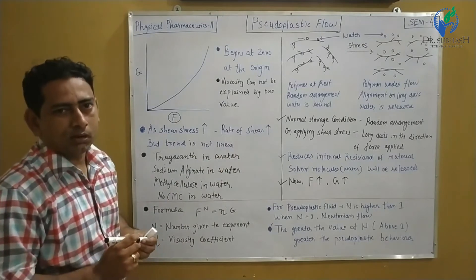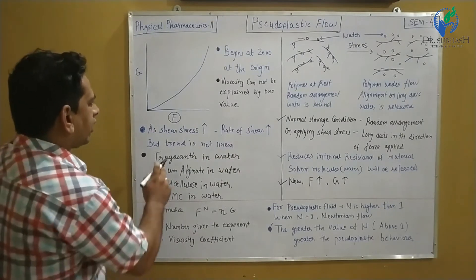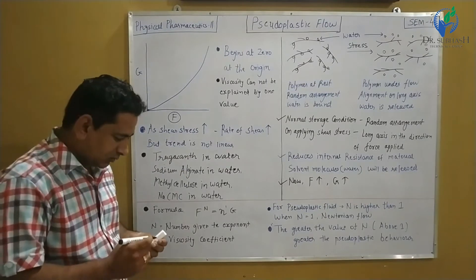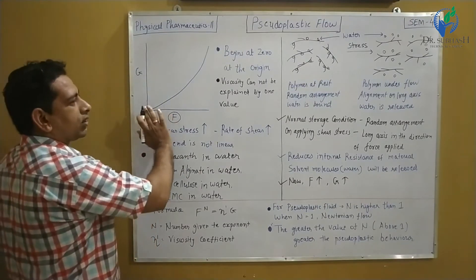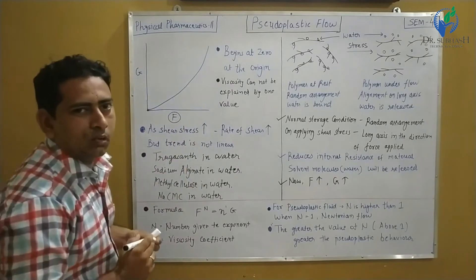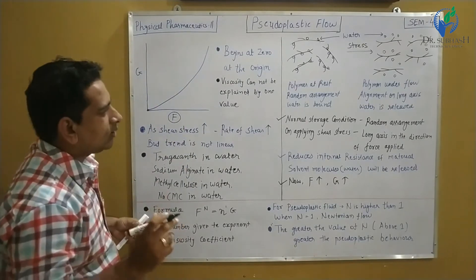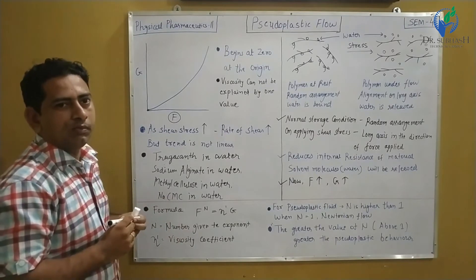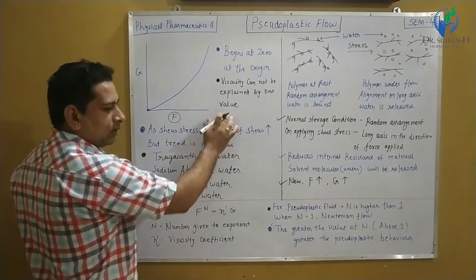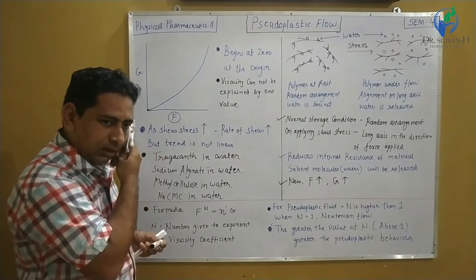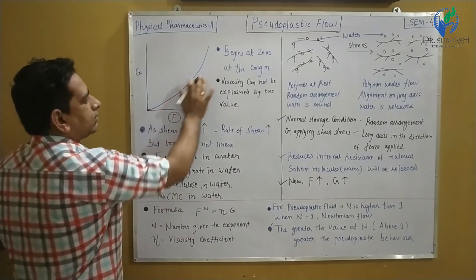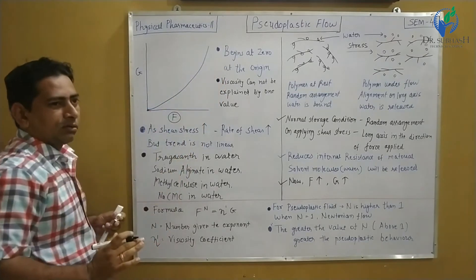The only difference compared to the plastic law is that the trend is not linear. If we are raising the shearing stress, then the curve obtained is not linear. That means if we want to define the viscosity of any Pseudoplastic substance, we cannot explain it in a single way — the viscosity is not explained by a single value because the flow pattern is not a straight line.